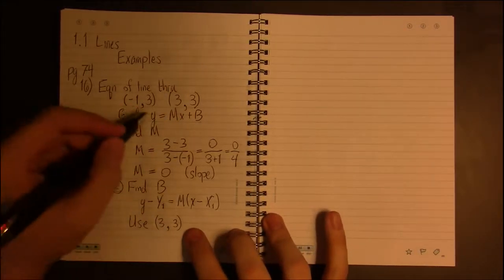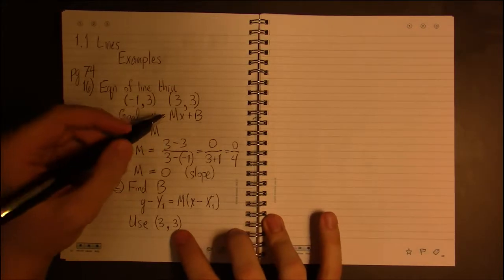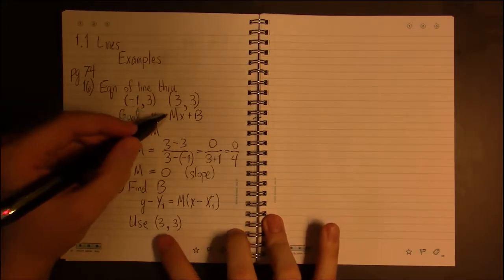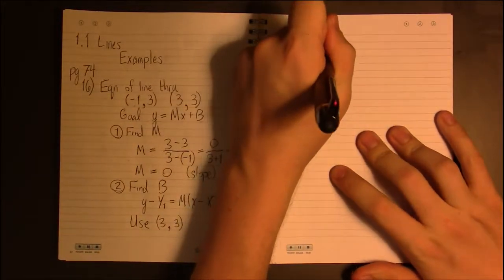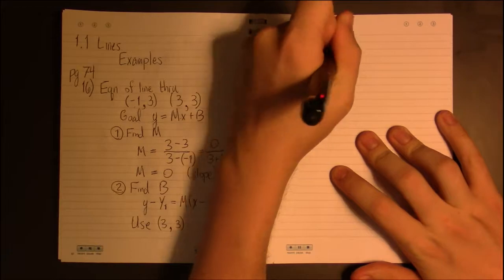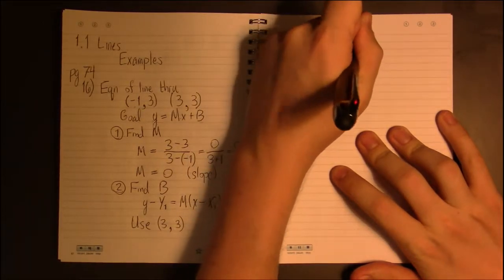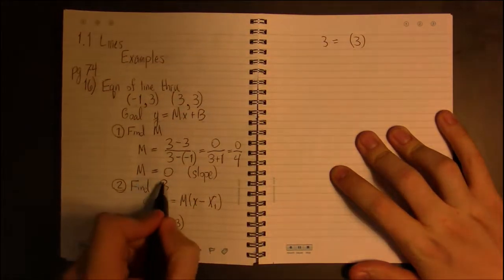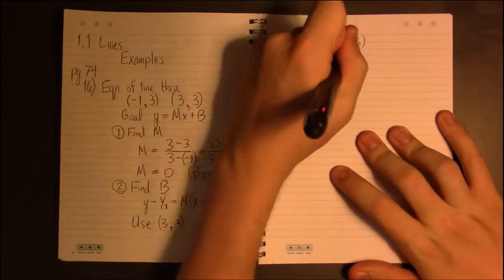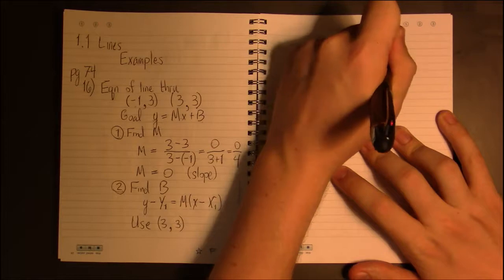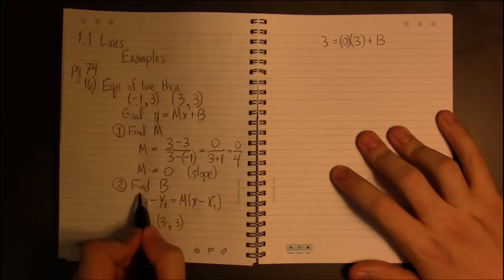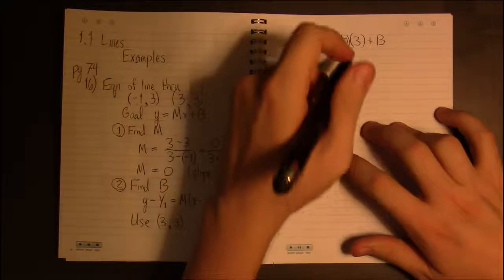plug in a point, say the point (3, 3) - we can choose (3, 3) or (-1, 3), either point will work - and plug it into this equation. So we'll plug 3 in for Y and 3 in for X as well. So 3 in for Y, 3 in for X, but we know what M is. We know that M is 0